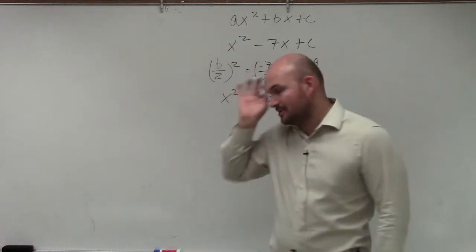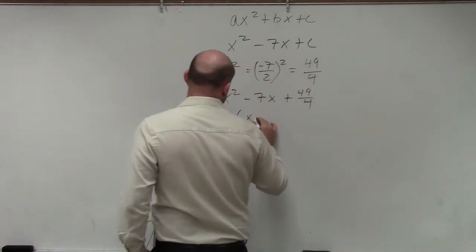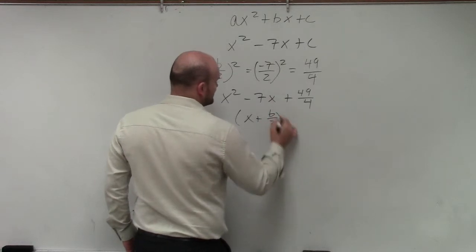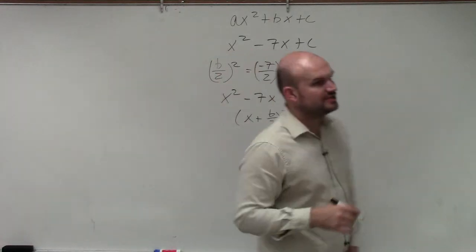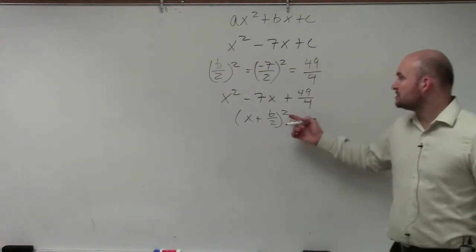Then the second step, as I mentioned, all you're simply going to do is replace b divided by 2 in for that factored form. So what was b divided by 2?